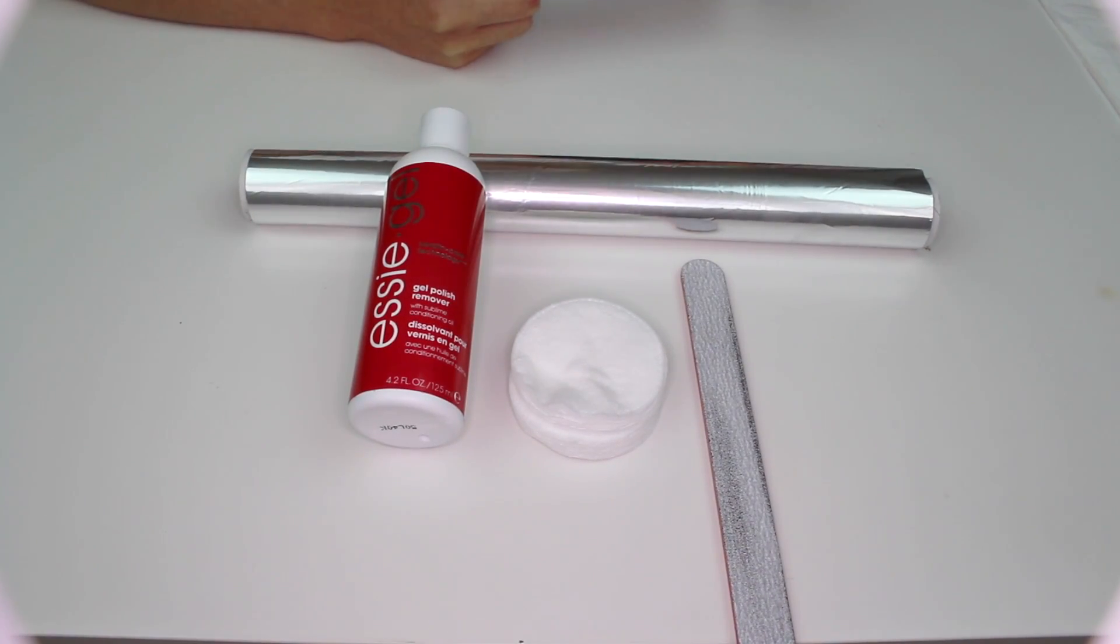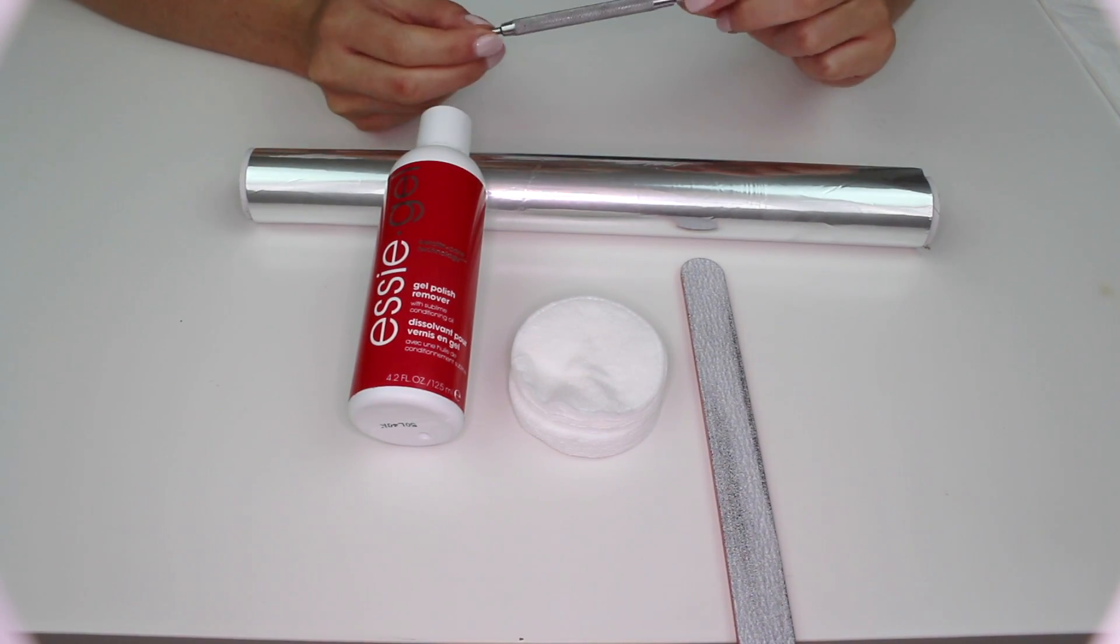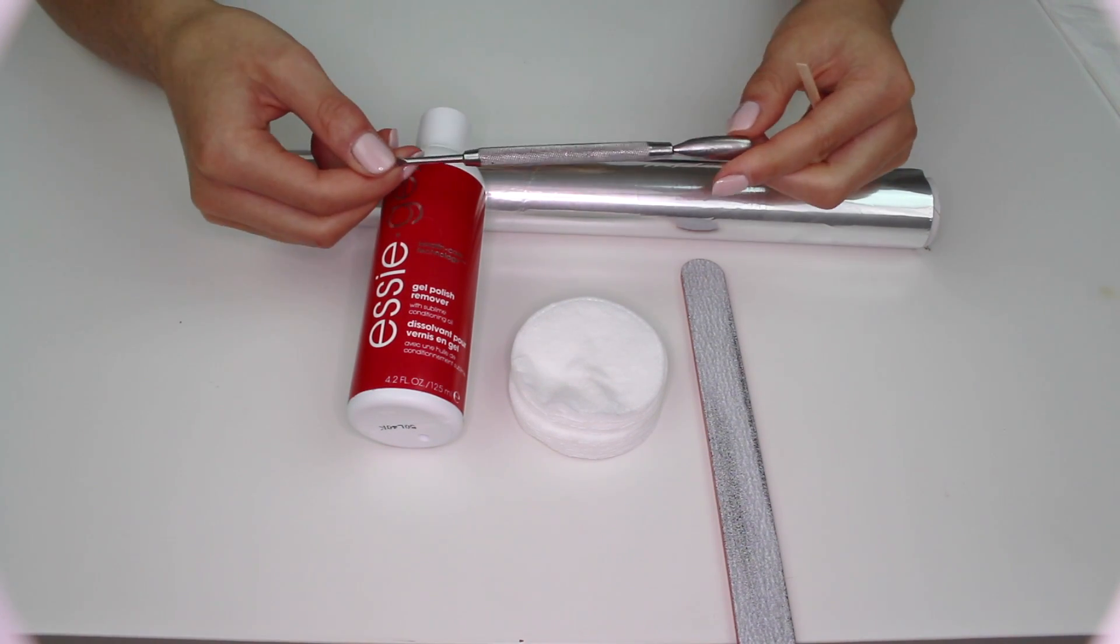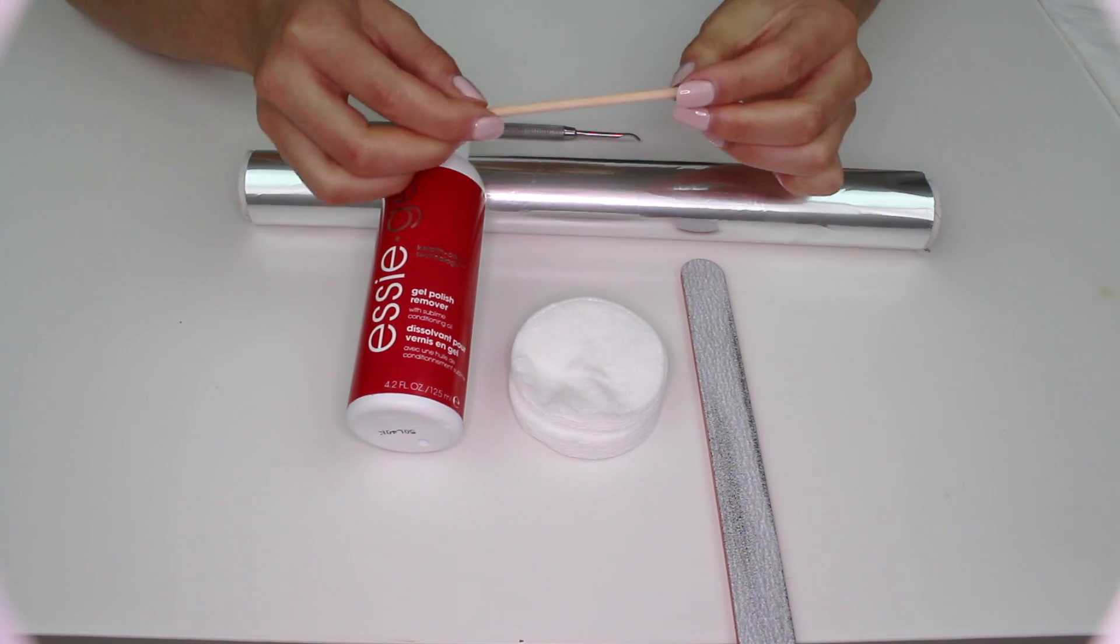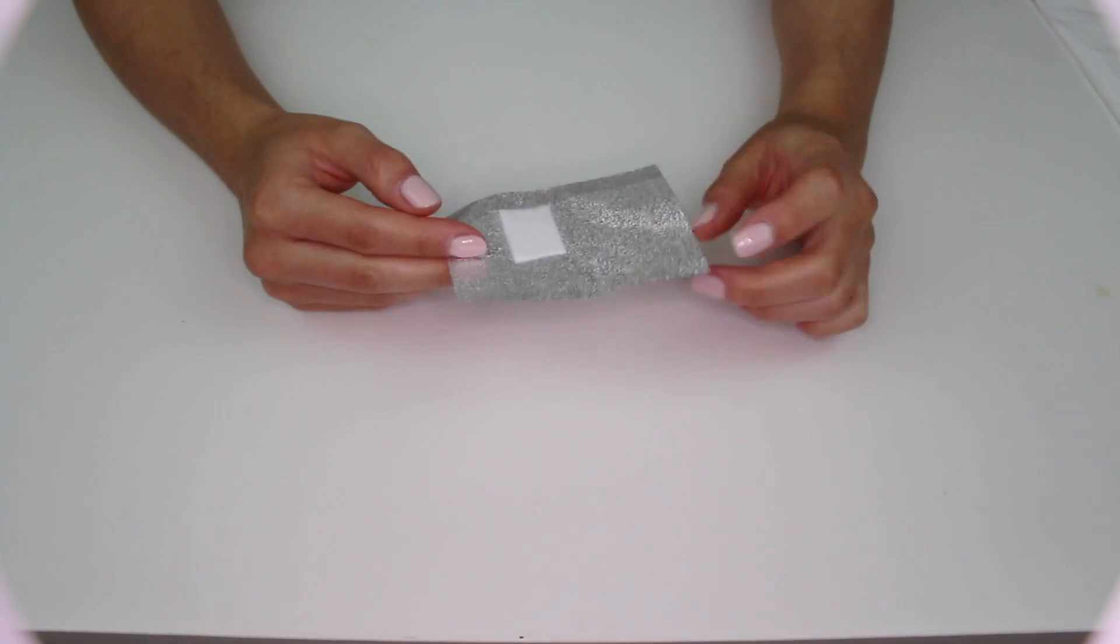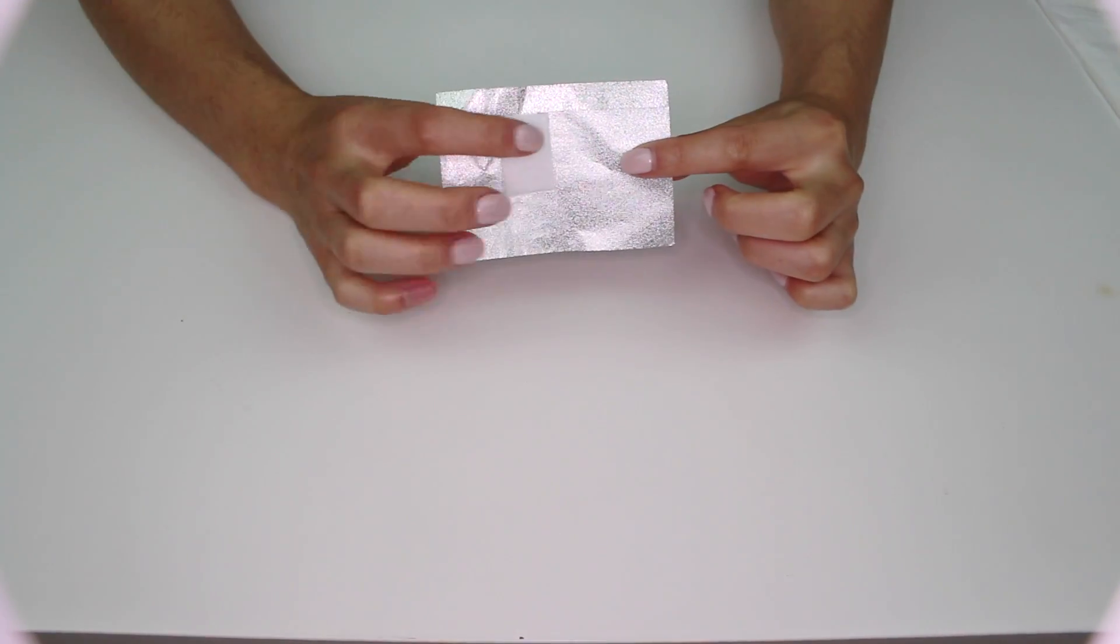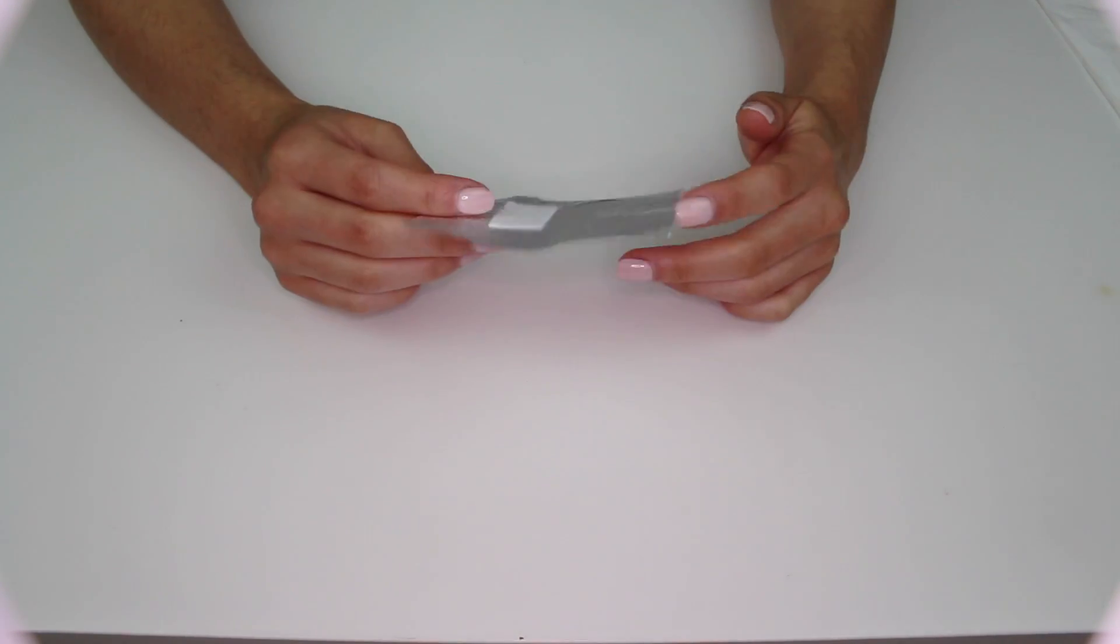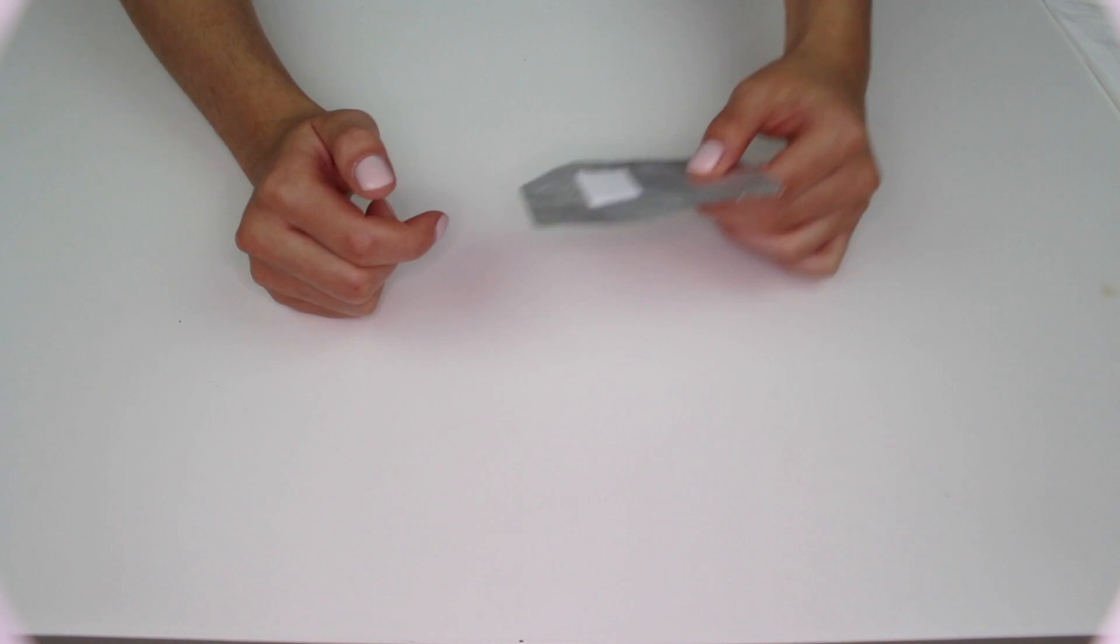You need a nail file and then you need some sort of tool to scrape the gel off once you've soaked it, so you can either use one of these which is a cuticle pusher or you can use an orange stick. If you want, you can purchase some of these which are ready-made ones with the cotton wool and everything, but if you make your own one it works out ten times cheaper so I would recommend making it yourself.